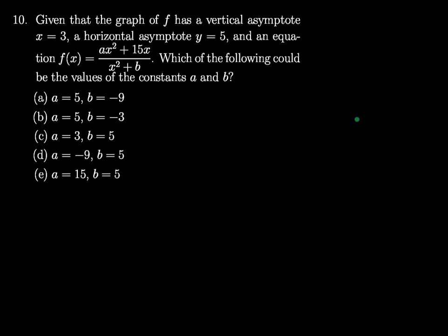Number 10. Given that the graph of f has a vertical asymptote at x equals 3 and a horizontal asymptote at y equals 5, and an equation f of x equals the quantity ax squared plus 15x divided by the quantity x squared plus b — which of the following could be the values of the constants a and b?